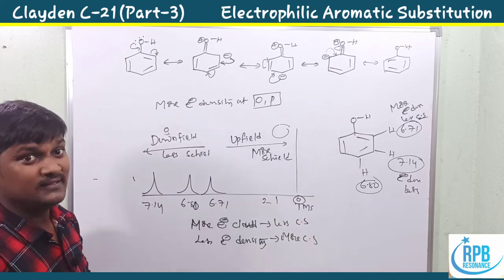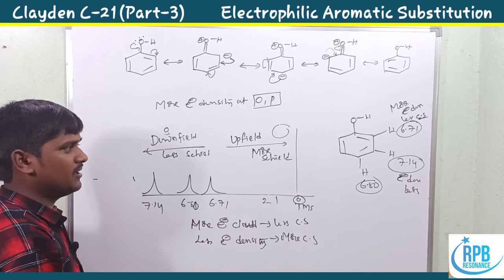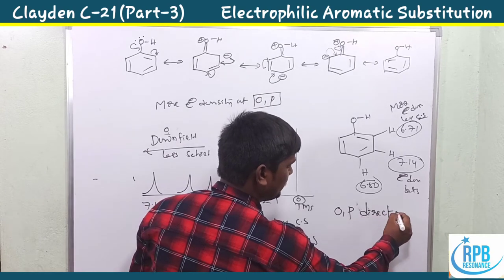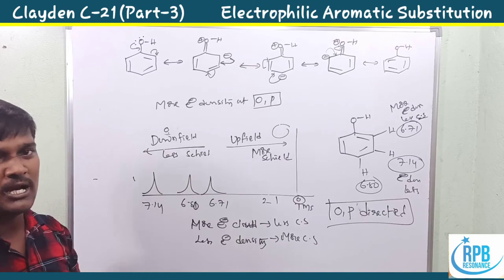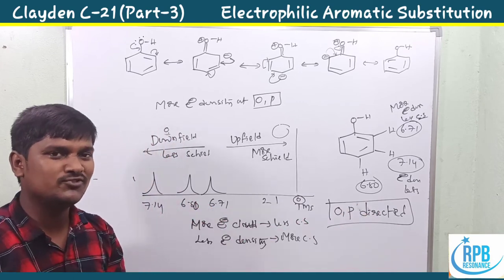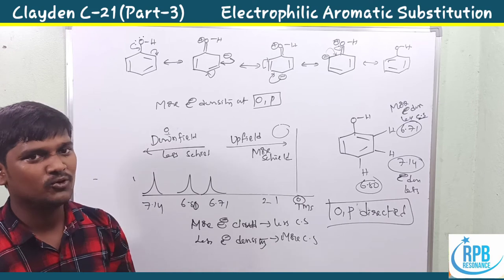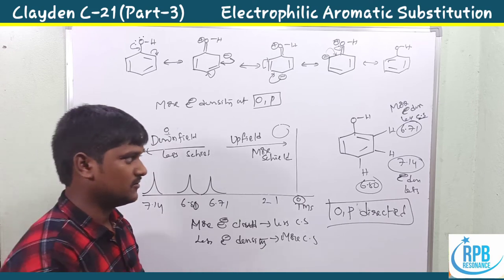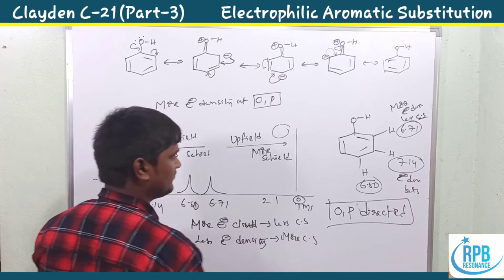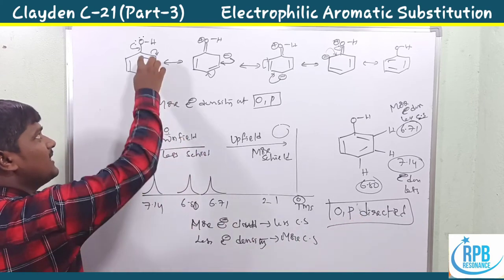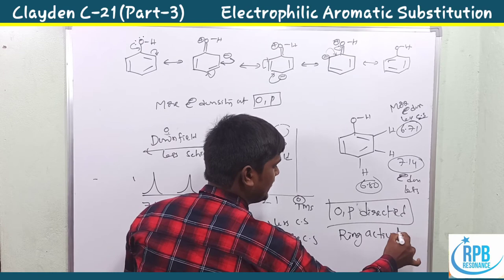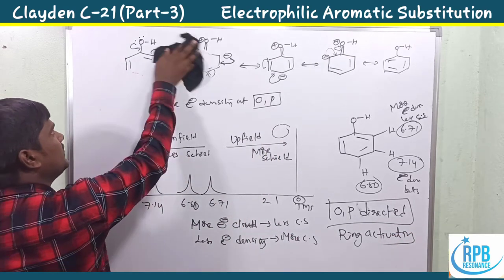So both delocalization structures and phenol NMR confirmation confirm that phenol is an ortho and para directing group. If any electrophile is treated with phenol, it directs to the ortho or para position, not the meta position. Phenol always gives ortho and para substituted products. It also activates the ring, so it is called a ring activating group.